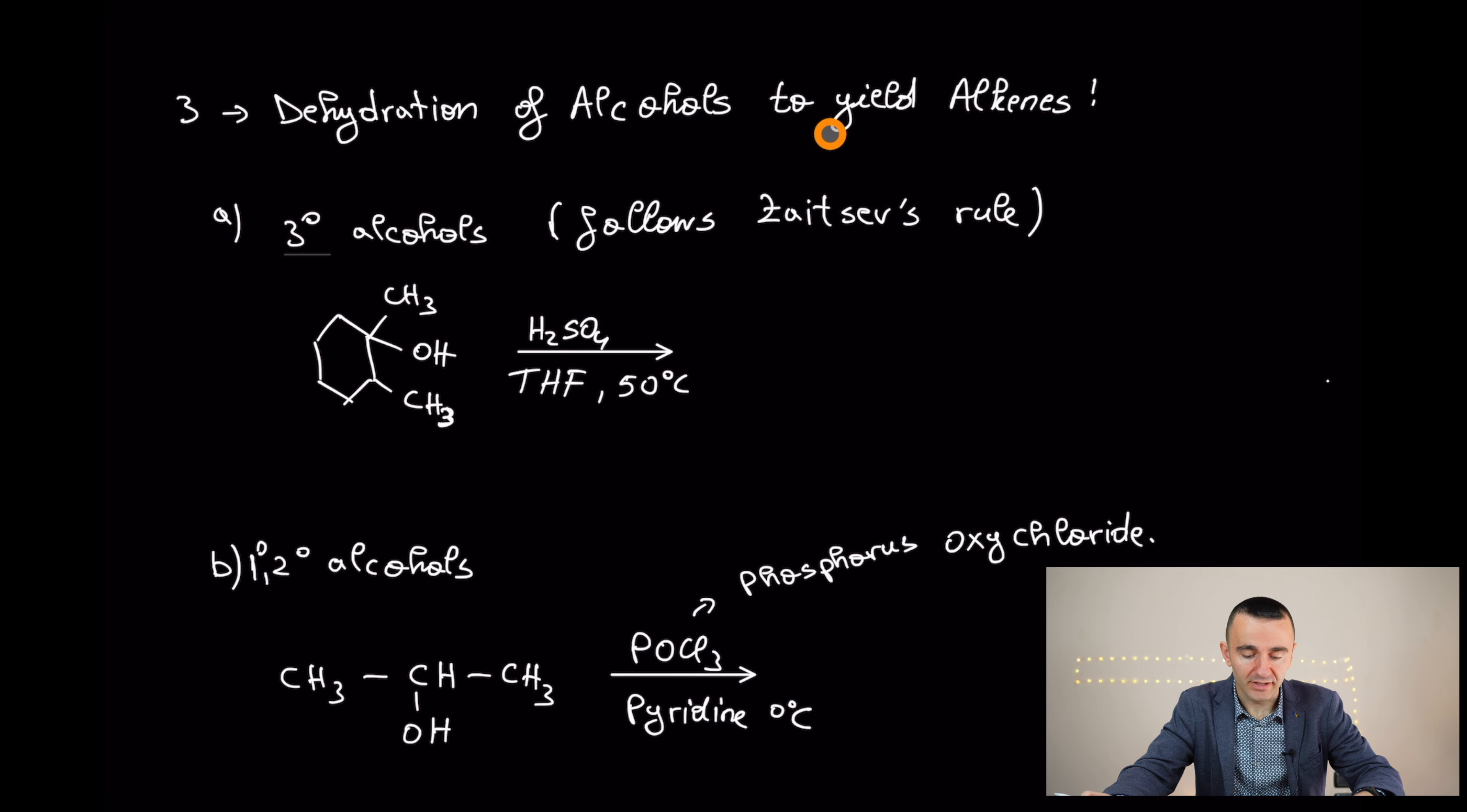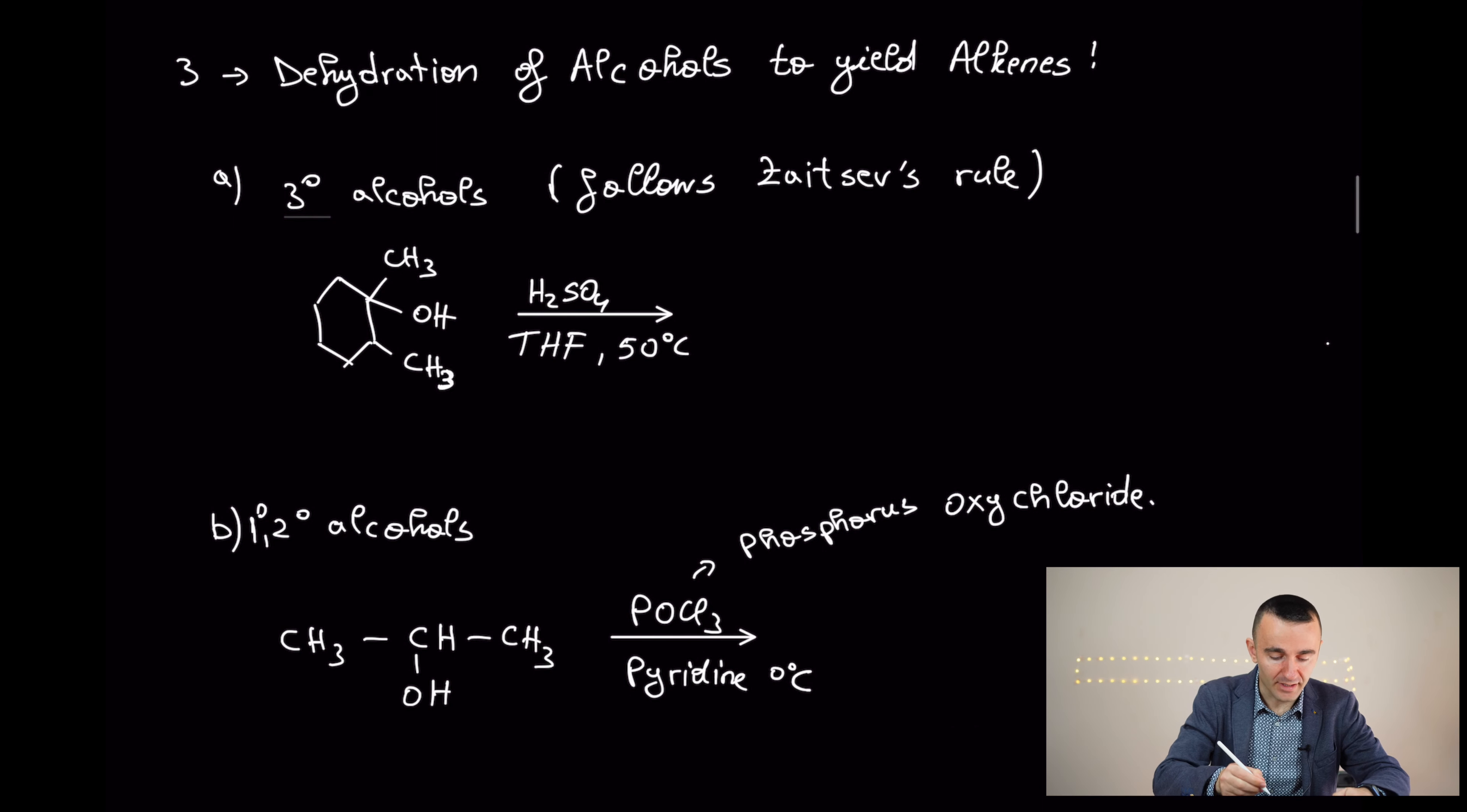Dehydration of alcohols to yield alkenes. Tertiary alcohols follow Zaitsev rule. They go acid catalyzed. And what we are going to find, what we are going to have in this case, formation of an alkene.